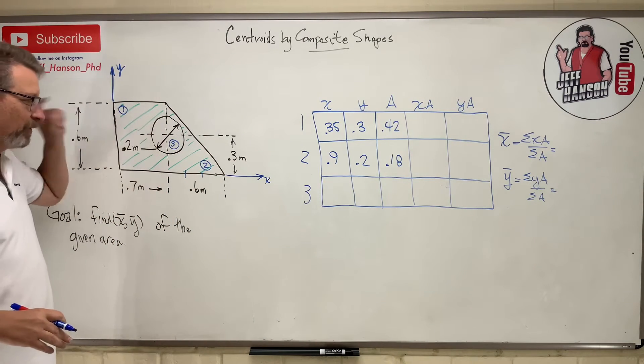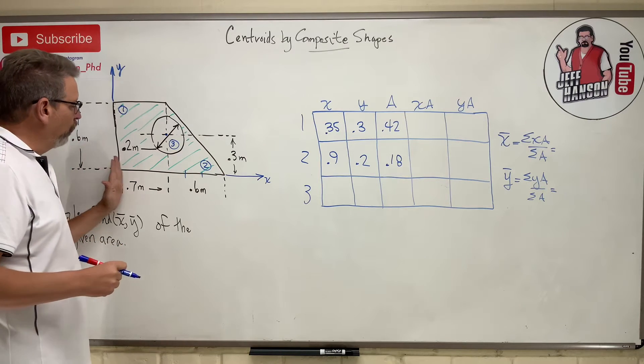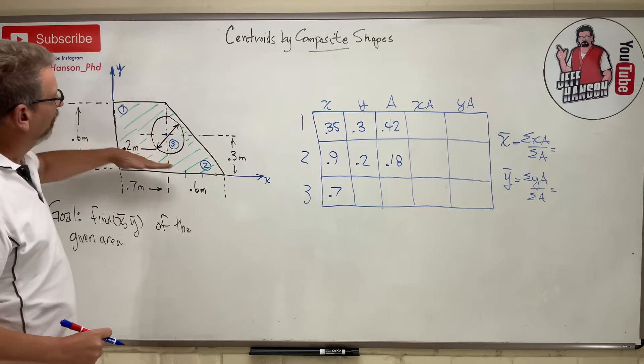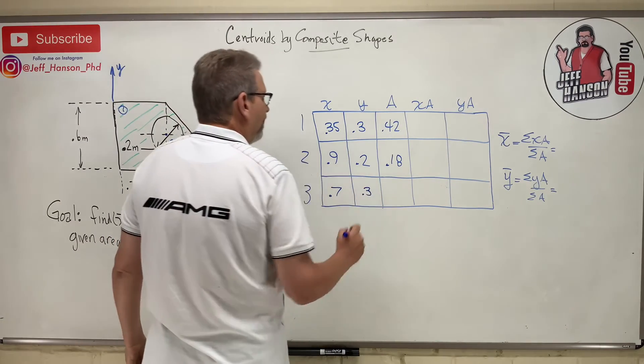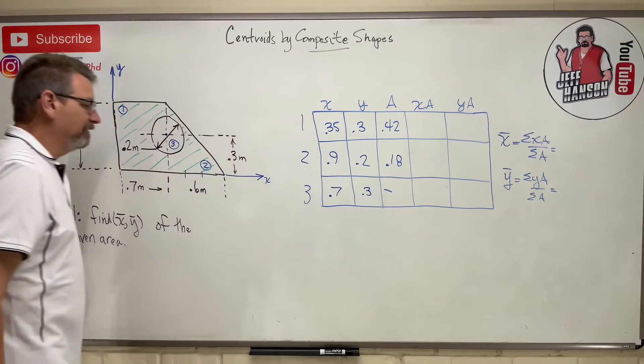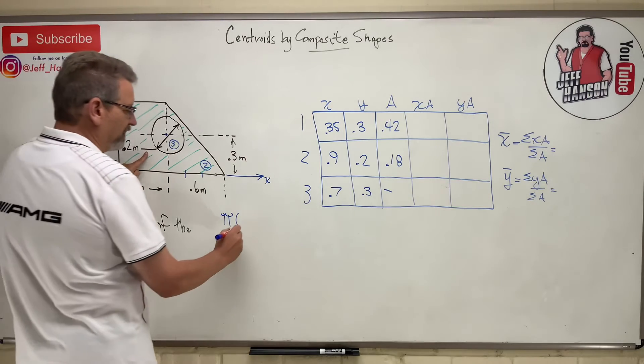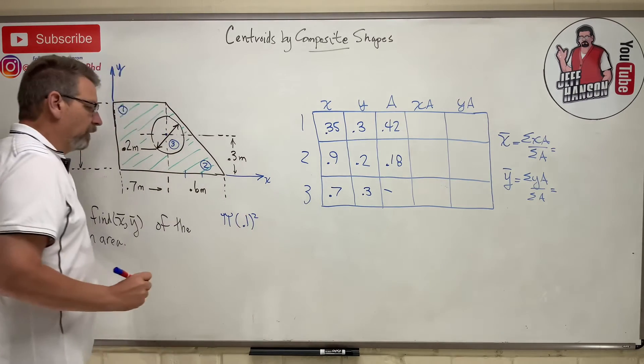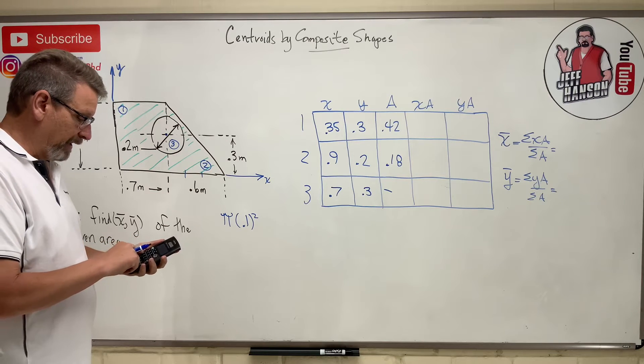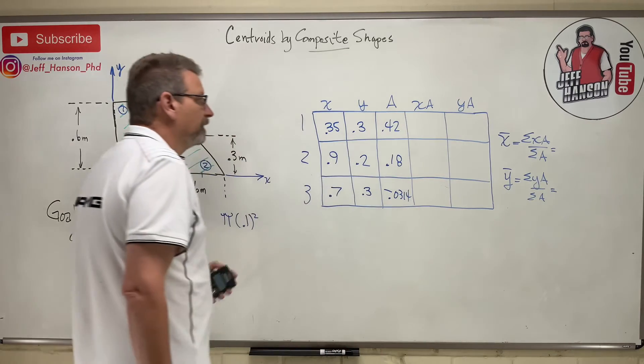We got one more to go, and that is shape number three. So where is X bar for shape number three? Well, shape number three's centroid is right in the middle of the circle, so X bar is 0.7. And Y bar? Well it's 0.3. And the area - this is the tricky part, not really that tricky - the area is not really there, so I know for a fact the area is going to be negative. And what is the area? It's just π r² isn't it? Pi times - they gave me the diameter is 0.2, so that's 0.1 squared. And that is 0.1 squared times π equals 0.0314.